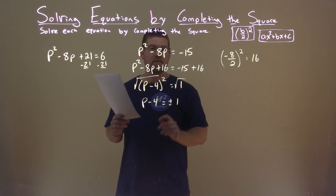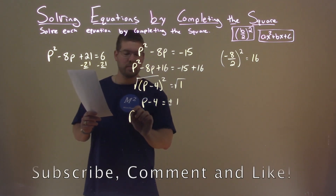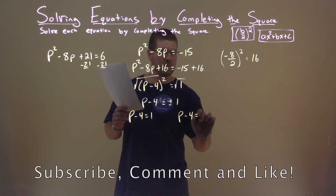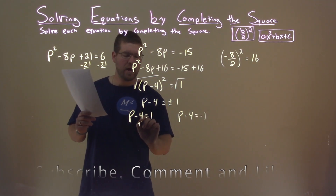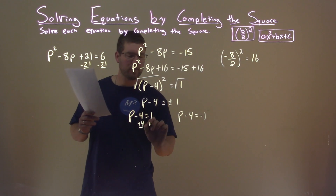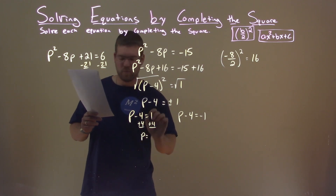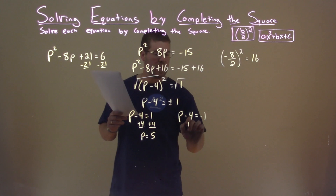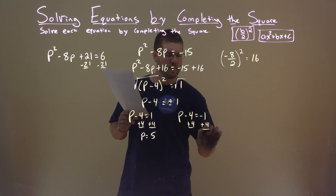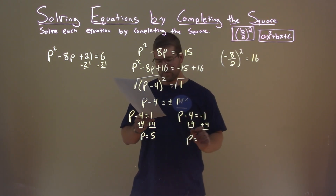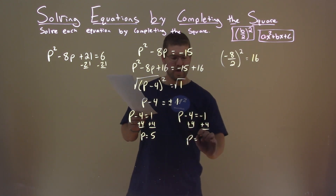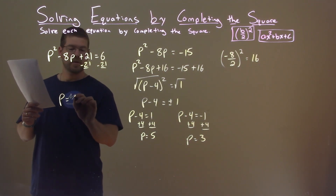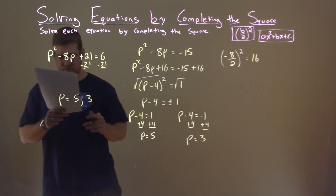We can break this into two equations: p minus 4 equals positive 1, and p minus 4 equals negative 1. Adding 4 to both sides: p equals 1 plus 4, which is 5. Adding 4 again: p equals negative 1 plus 4, which is positive 3. Our two solutions are p equals 5 and positive 3.